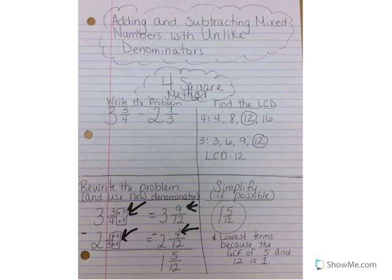So it's 1 and 5 twelfths. And the last step is to simplify if possible. And we have 1 and 5 twelfths. It's in lowest terms because the greatest common factor of 5 and 12 is 1. And remember when your greatest common factor is 1, you're done. So 3 and 3 fourths minus 2 and 1 third is 1 and 5 twelfths.